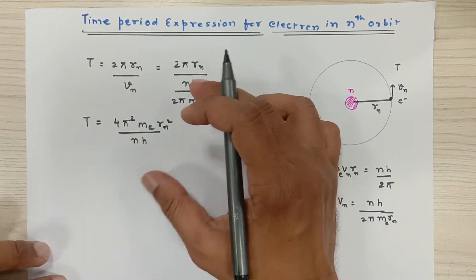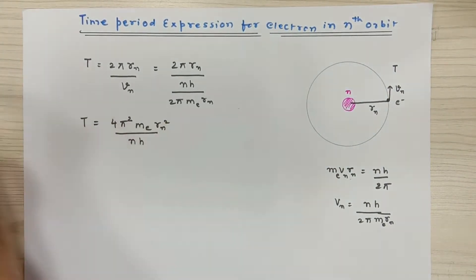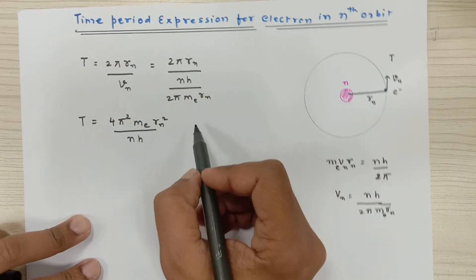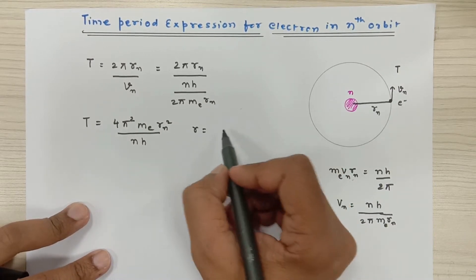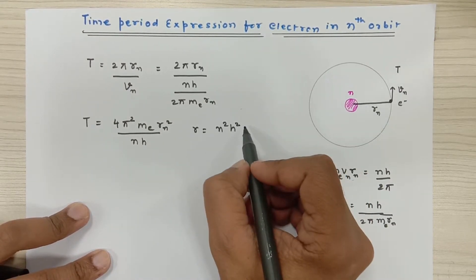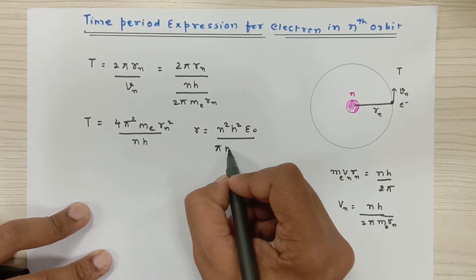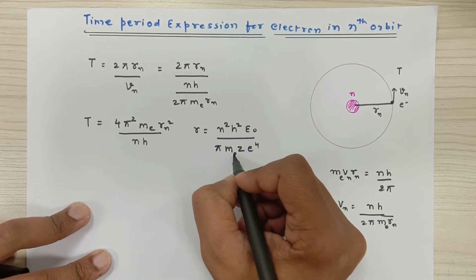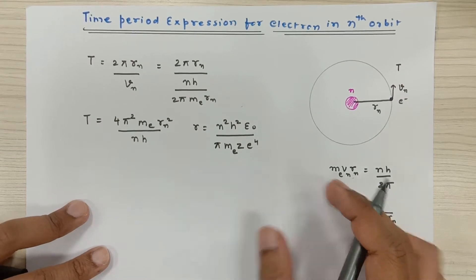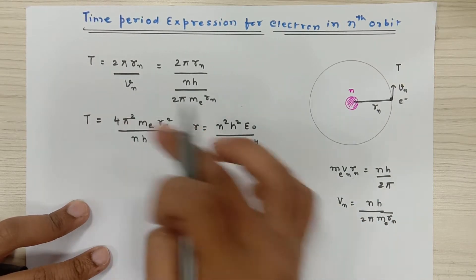We want our time period expression to be reduced only in z and n. But here we have radius, and previously I have already derived that the radius expression r is equal to n²h²ε₀ upon πmze⁴, where this is the mass of the electron. Now this expression I am going to put it over here and I am going to solve it, so I get the time period expression.